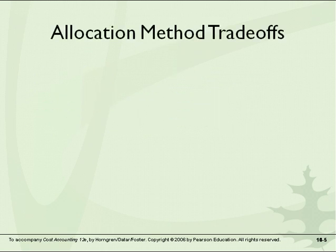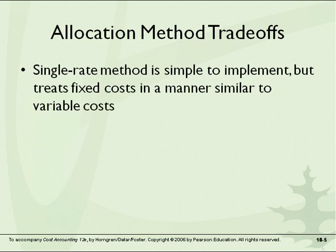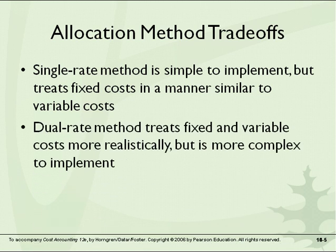There's a trade-off between allocation methods. The single rate method is simple to implement, but it does treat fixed costs in a manner similar to variable costs. A dual rate method treats fixed costs and variable costs more realistically, but it's more complex to implement.